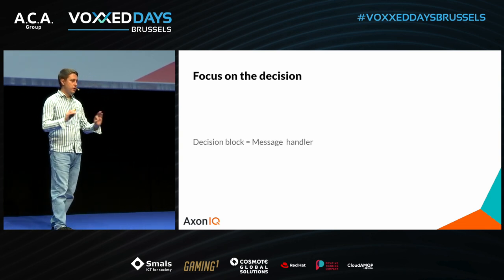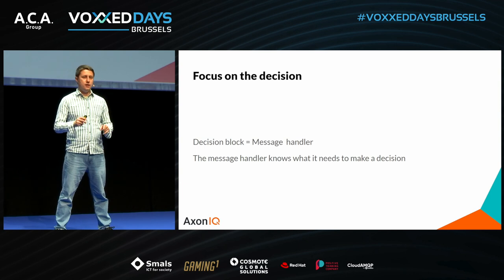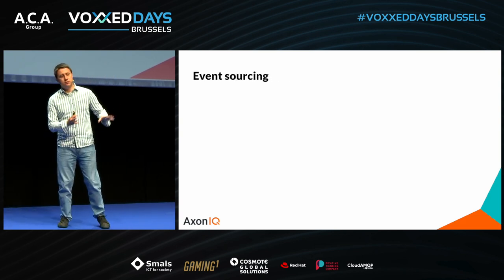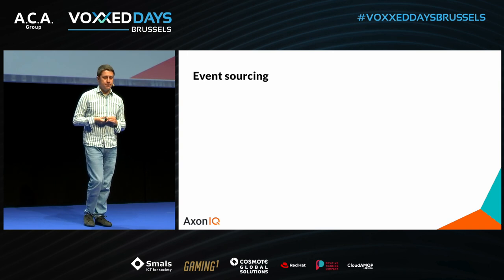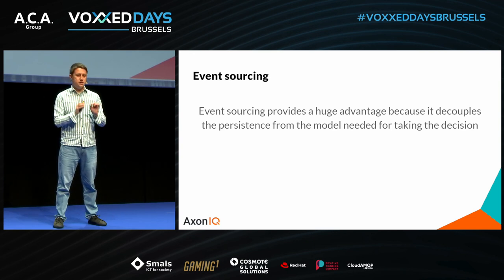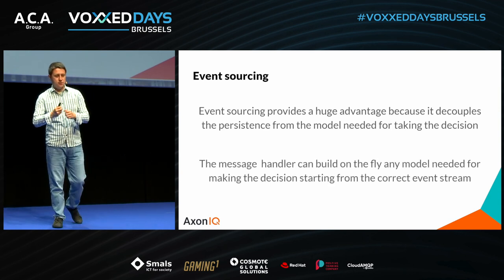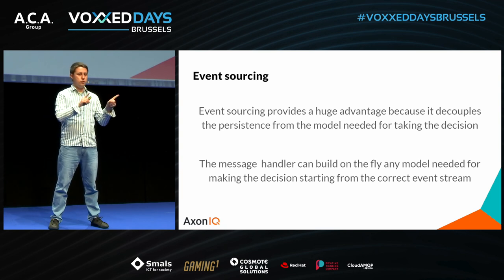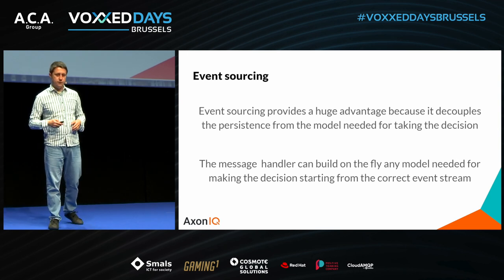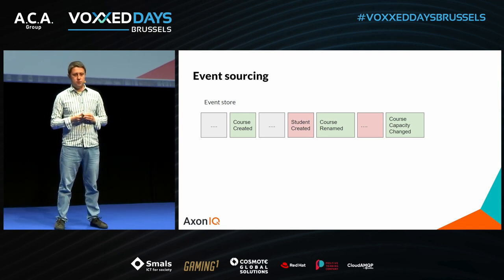To help us further on this journey, we are going to use event sourcing. Event sourcing provides an advantage because it decouples persistence from the model needed for taking the decision. When our message handler takes this advantage, it can dynamically load only what it needs, build the correct model, make the decision, and publish an event if necessary. For example, to handle an update-course-capacity command, our command handler says: I just need to check whether the course exists and whether the capacity is different from the previous one.